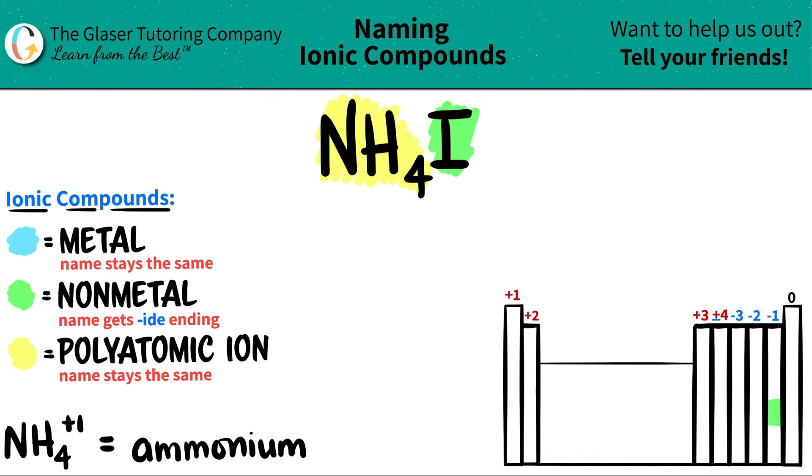Now, all we have to do is just name it. The polyatomic comes first because it's literally the first one that's here, right? And that name always stays the same. That's why you have to memorize them.